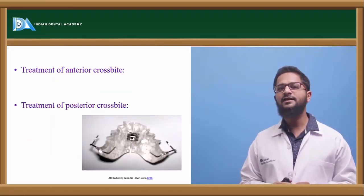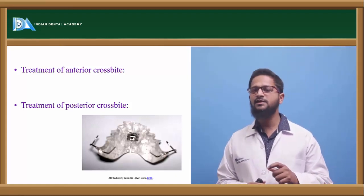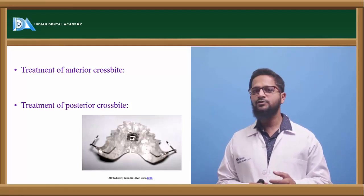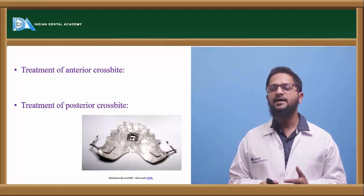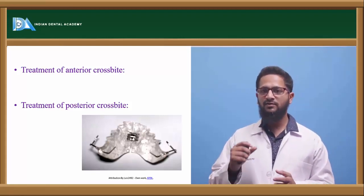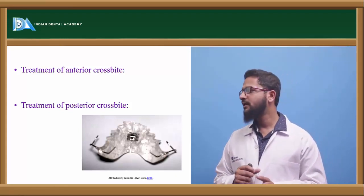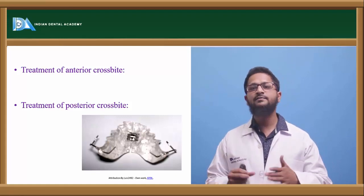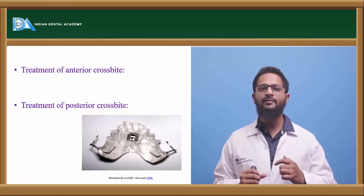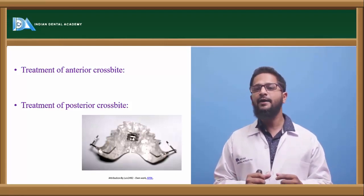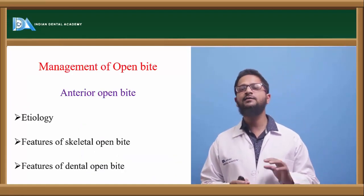Since Class III malocclusion is characterized by anterior crossbite due to negative overjet, this can be treated using face mask therapy to protract the maxilla. Apart from this, intraoral splints with screws placed at the anterior region also help to protract the maxilla and correct the anterior crossbite. If posterior crossbite is also present because of a narrow maxilla — as these patients usually have a wider mandible compared to the maxilla — we can incorporate RME, rapid maxillary expansion, to expand the maxillary arch.